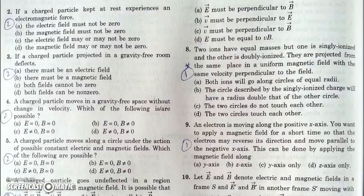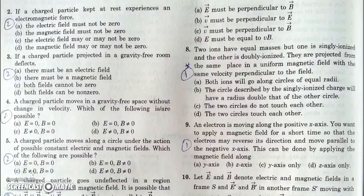In question number five, a charged particle moves along a circle under the action of possible constant electric and magnetic force fields. If both are zero — no, the particle cannot move in a circle as there will be no force. If E is zero and B is non-zero — obviously this can be the case because only magnetic field is there and the particle can move in a circle. If E is non-zero and B is zero — no, this can't be the case because in a uniform electric field there can be only two paths: a straight line or a parabola. When both fields are non-zero, the motion can be a straight line or a helical with non-uniform pitch, but it can't be a circle.